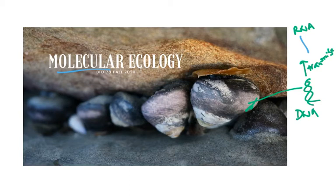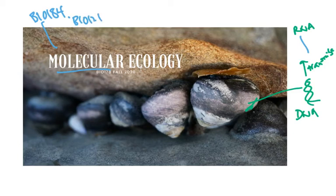Even though you haven't taken molecular ecology before, if you think back to other courses — maybe bio 184 in genetics, or bio 121 — you have background information for this molecular side of things. So you already know some things about molecular ecology.